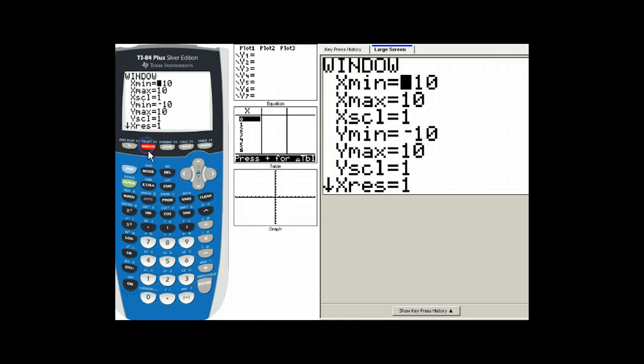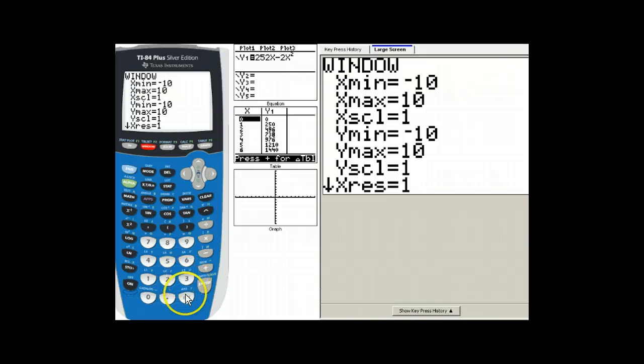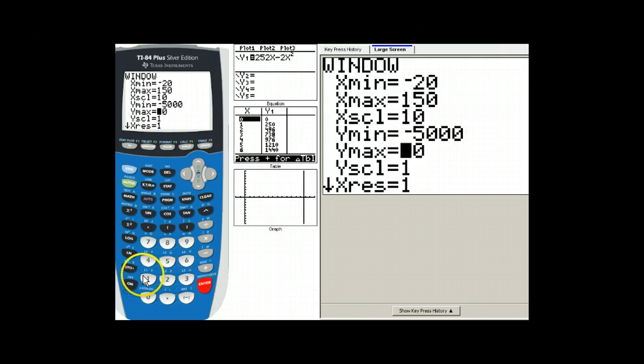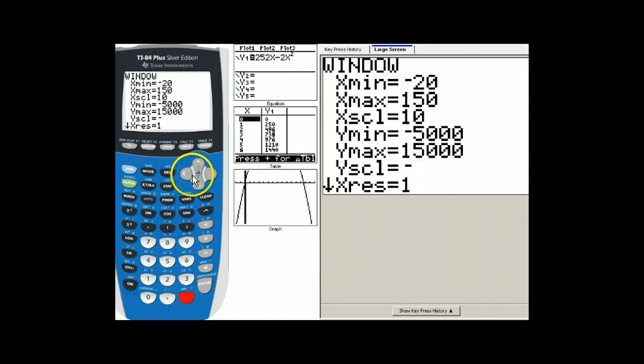Then I need to set a window. Now I've done this problem before, so I know that -20 for an X minimum followed by 150 for an X maximum and an X scale of 10, that works for the X. For the Y, -5,000 for a minimum, 15,000 for a maximum, and a Y scale of 5,000 works.